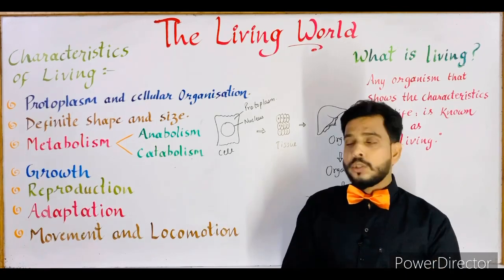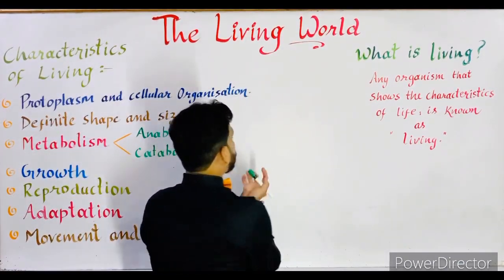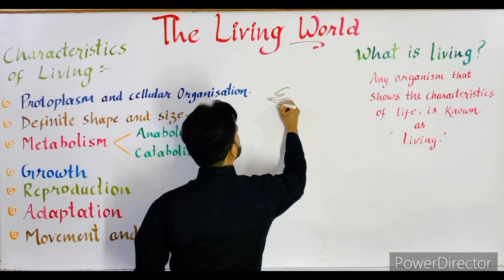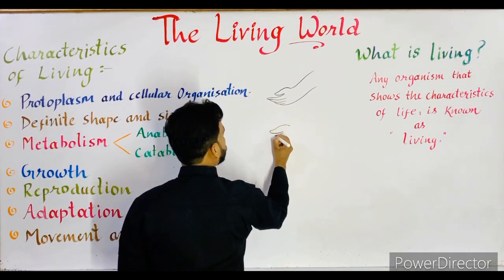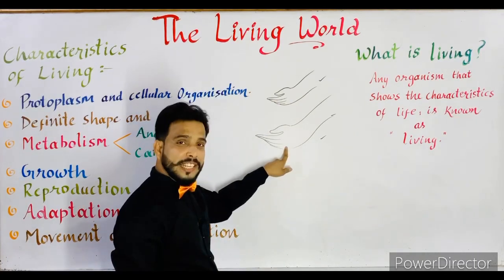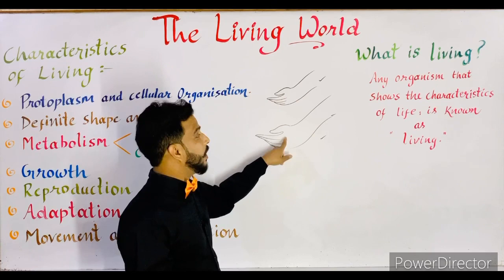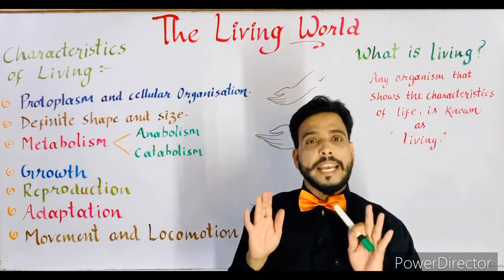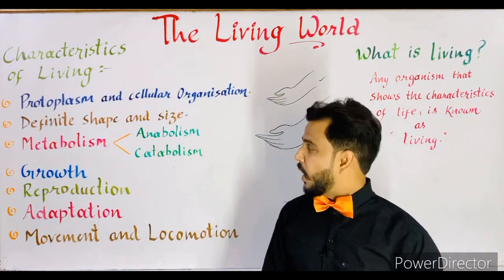The next characteristic is growth. For example, when you were two years old the size of your hand was small, and now at about 16 years old in 11th class the size of your hand is larger. This permanent change in the size and mass of an organism is termed as growth. Growth is found only in living beings — non-living things do not show any type of growth. So growth is an important characteristic feature of all living beings.